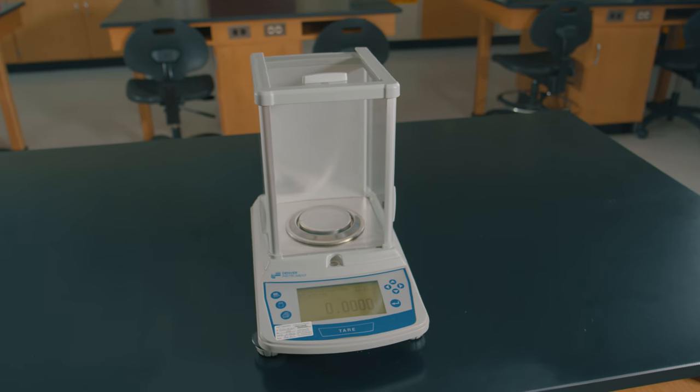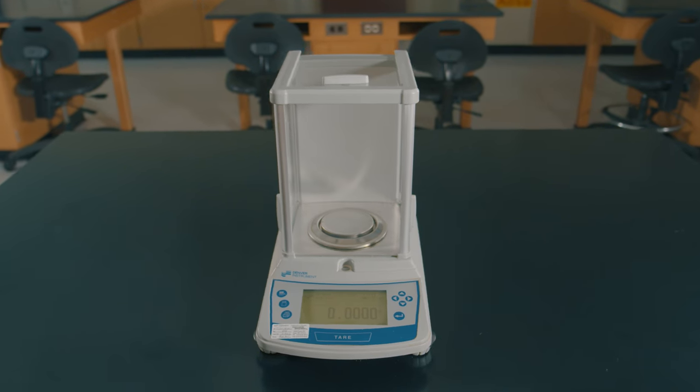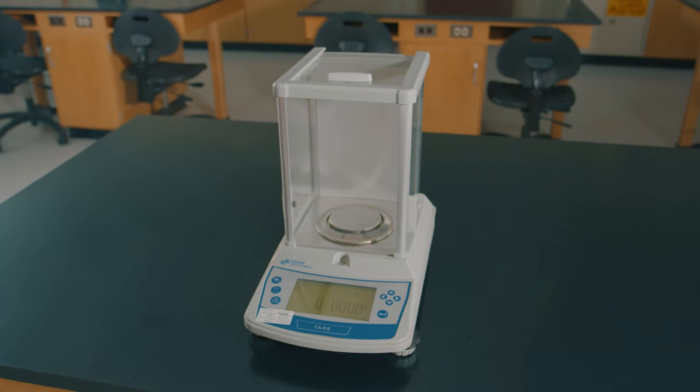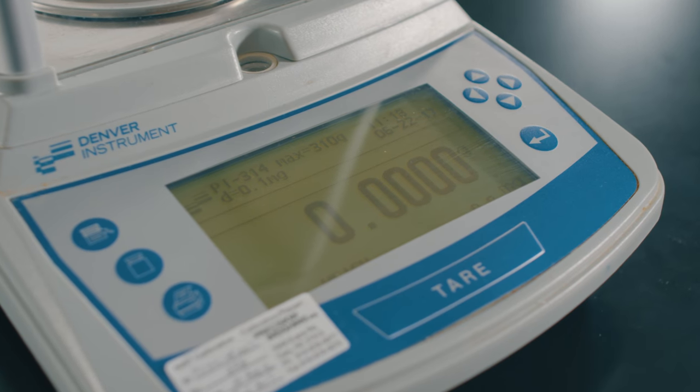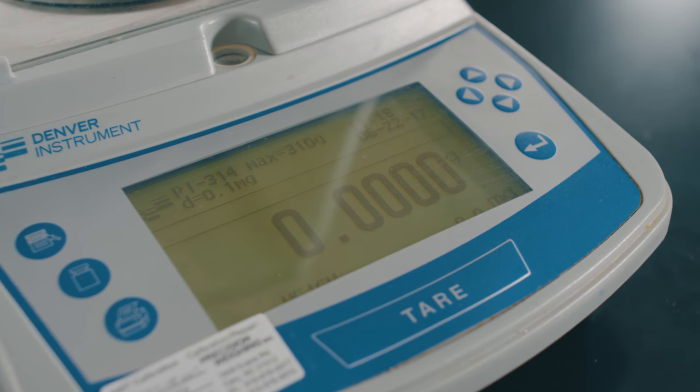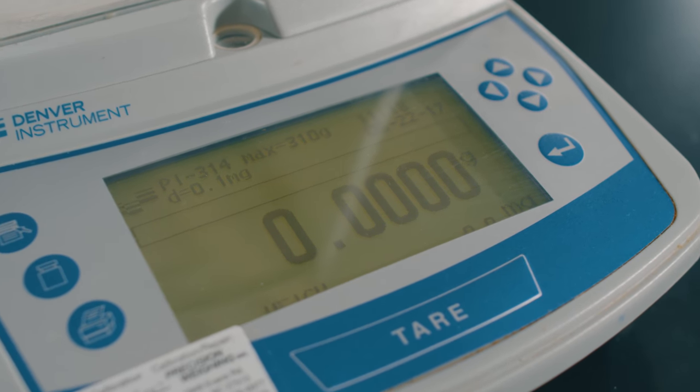One of the most commonly used pieces of equipment in biotech laboratories is called an analytical balance. We can use it to take very precise measurements, four places to the right of the decimal point.